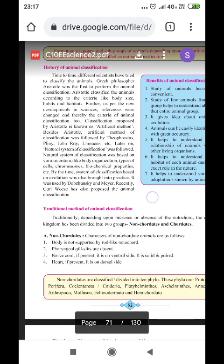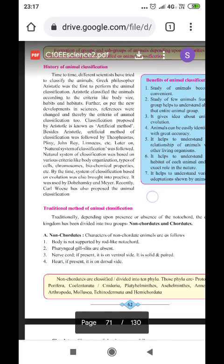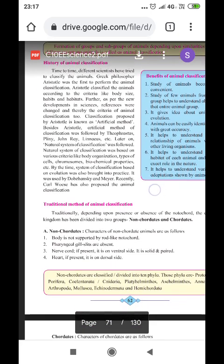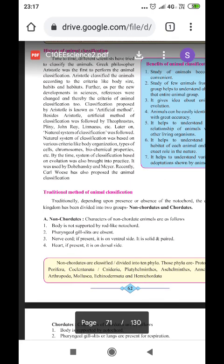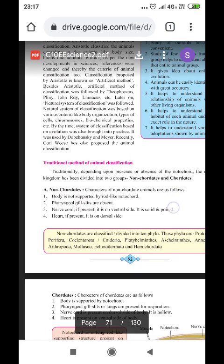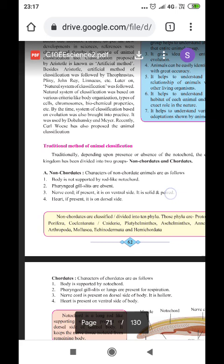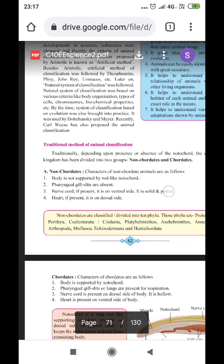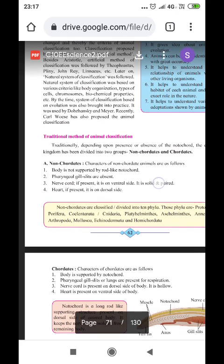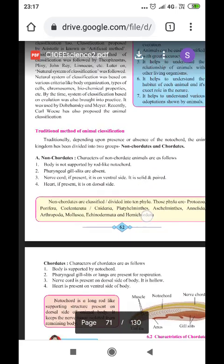History of animal classification, this topic is being omitted. So, we will move further with the next sub-topic, that is, traditional method of animal classification, in which non-chordates and chordates are there. Though non-chordates are not there, but still some introduction about non-chordates, I would like to give.